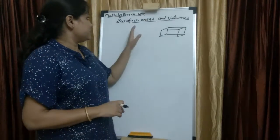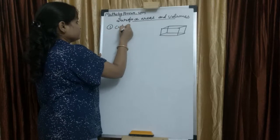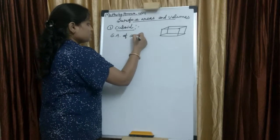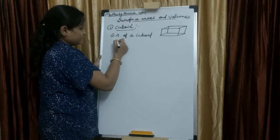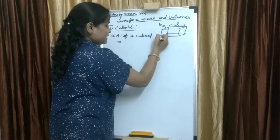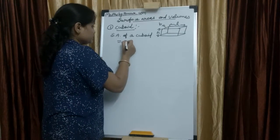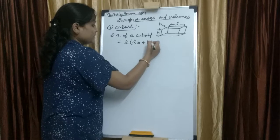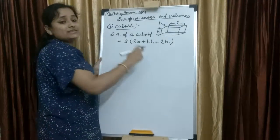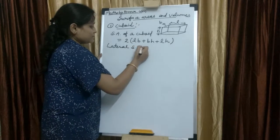Hello students, today my topic is surface areas and volumes. So this is a cuboid. The surface area of a cuboid equals 2 times (l×b + b×h + l×h), where l is length, b is breadth, and h is height.